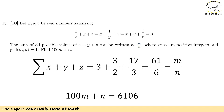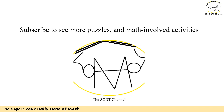The greatest common divisor of m and n is 1, which holds true here. So we have found m and n. The only thing left is to compute 100 times m plus n, which gives us 6106 as the final answer.